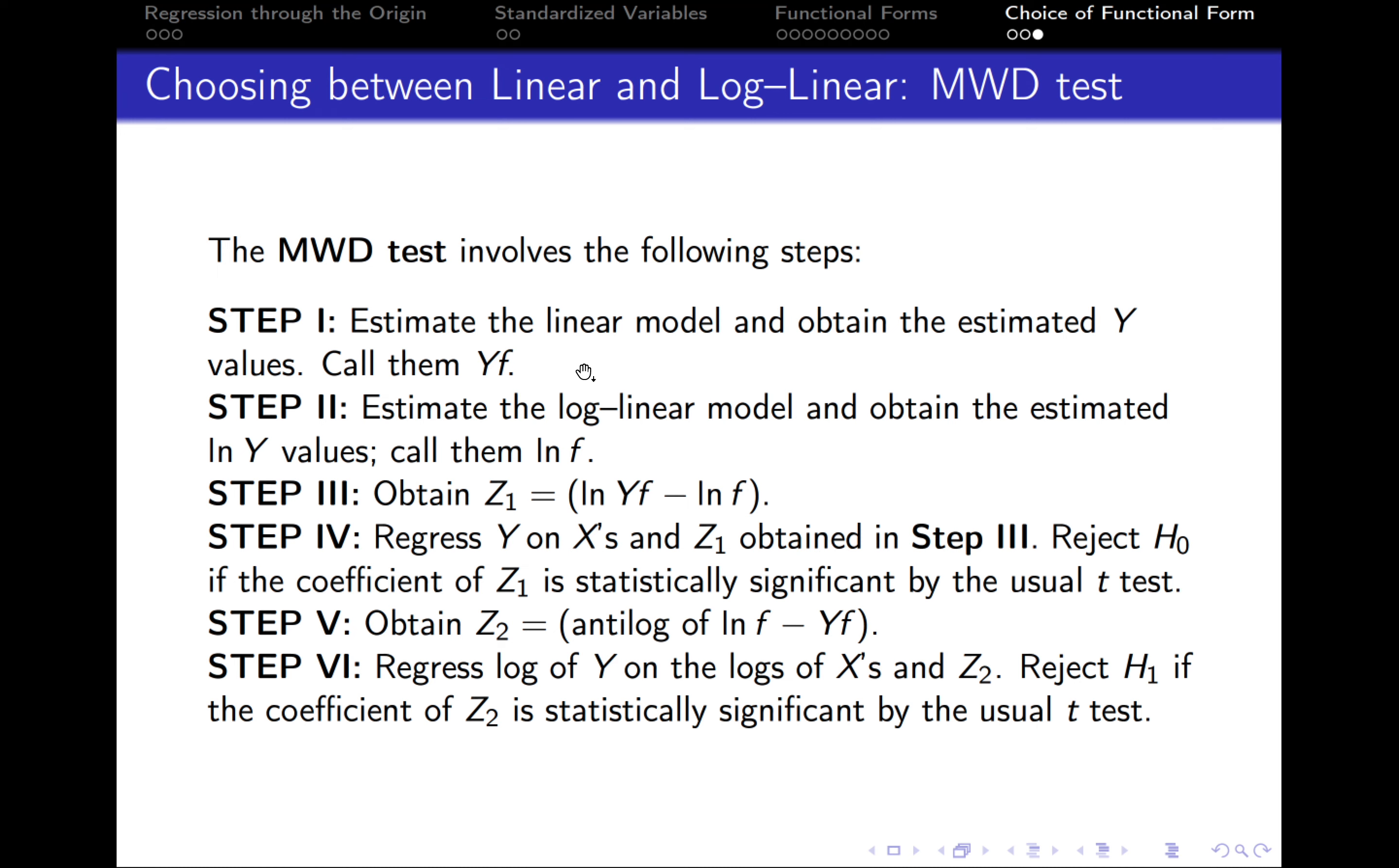After this, we need to estimate the log-linear model, so we regress the natural logarithm of Y on the natural logarithm of X's and obtain the estimated ln Y values. For example, we can call them ln f. In the next step, we need to obtain a new variable, we can call it Z1, and it is constructed in the following way. We take the values of Yf from the first step, take the natural logarithm of them, and from them we subtract the values from the second step, ln f.